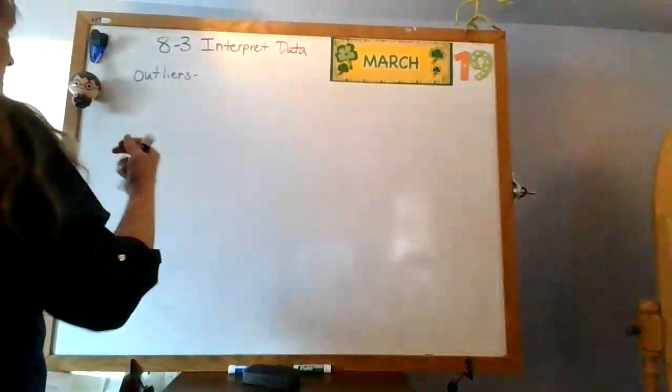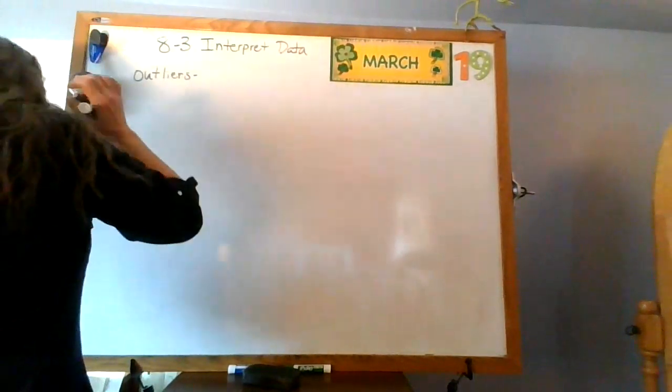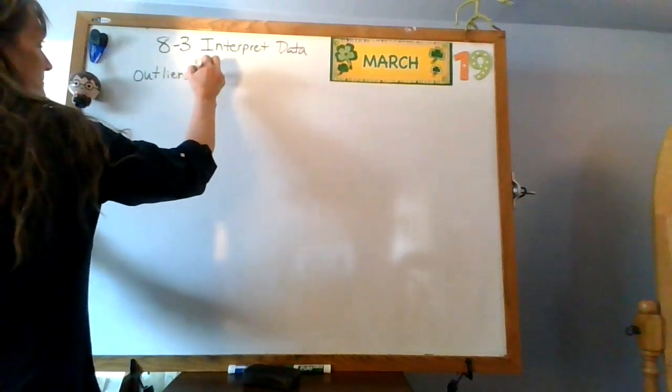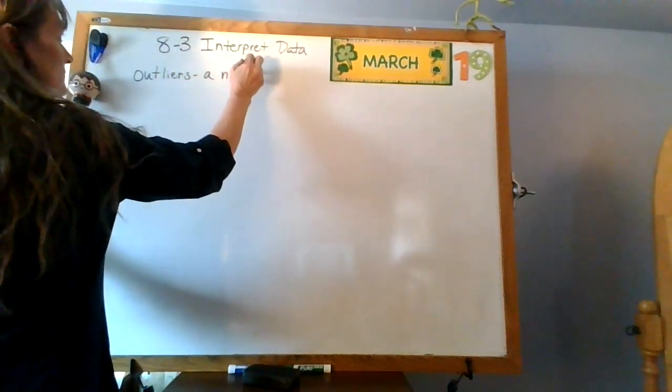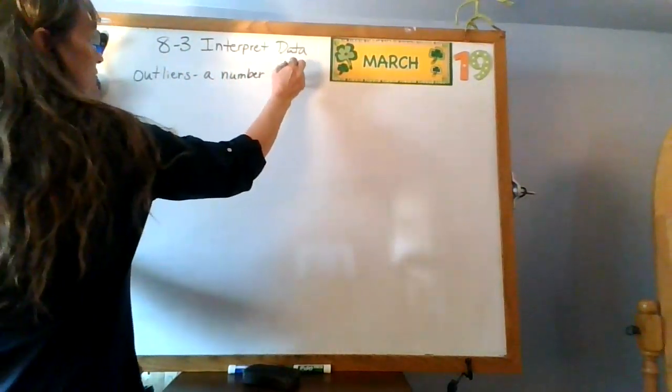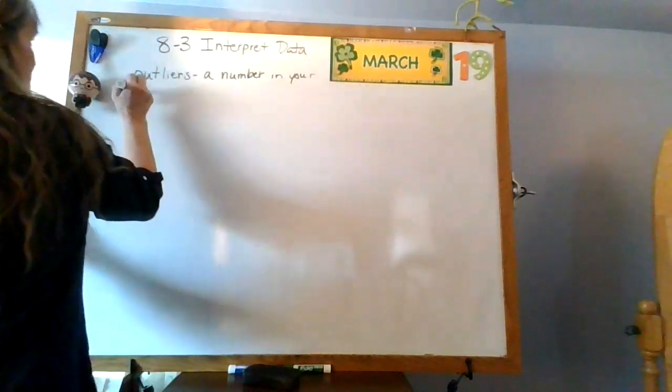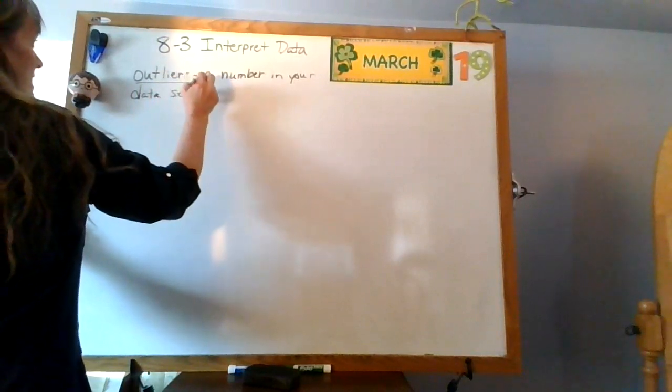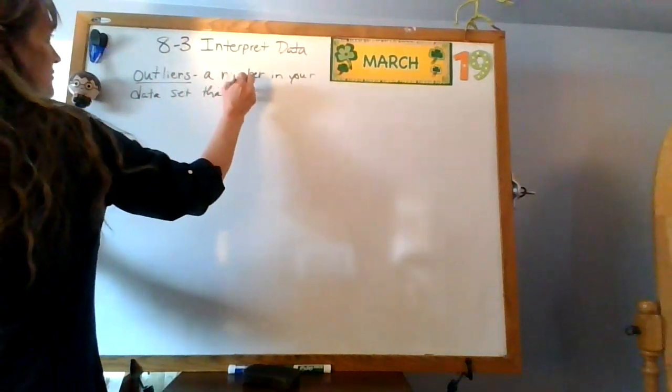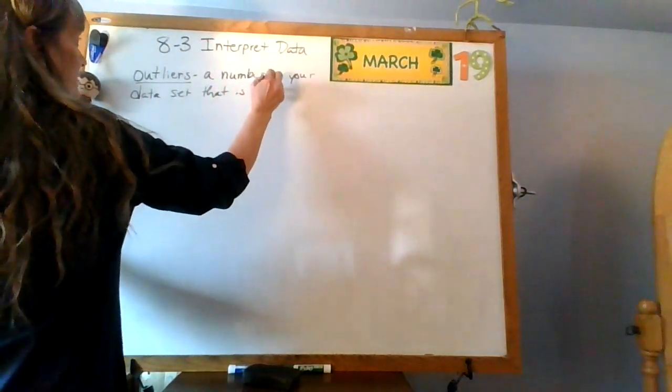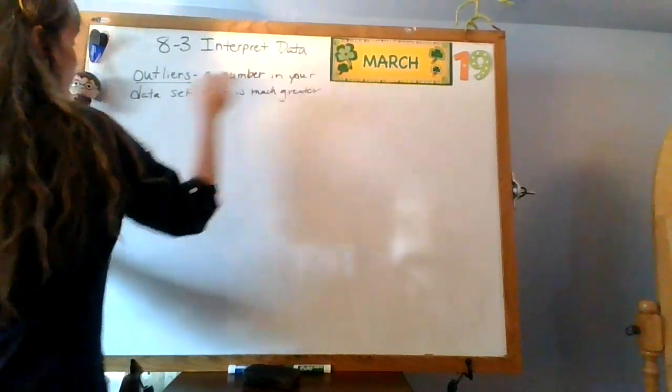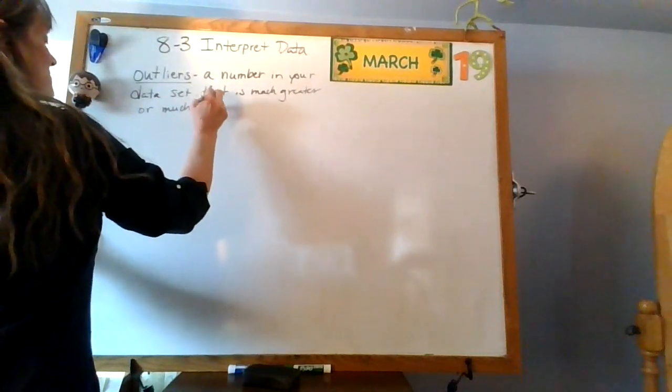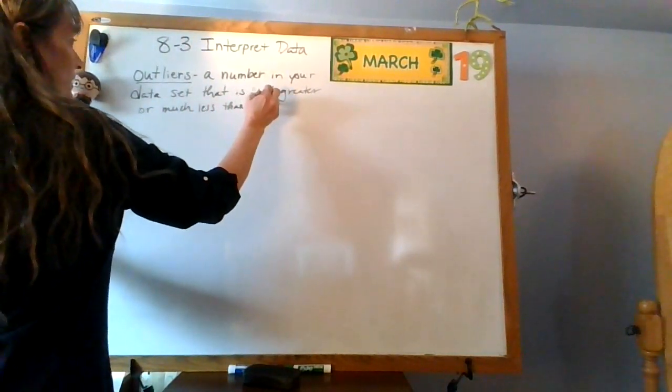And then an outlier. So an outlier is, it's a number in your data set, and it can be either of these. That it is much greater, or much less, than the other numbers.